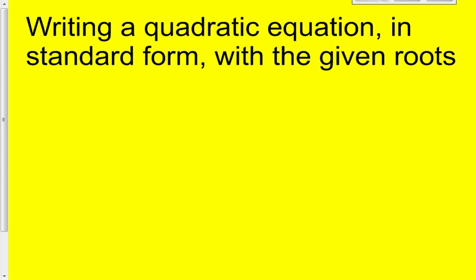Hi class, the second part of our notes for today is writing a quadratic equation in standard form with given roots. The way I like to explain this one is it's kind of like working backwards. If you were to see this equation in standard form, x squared minus 5x plus 6 equals 0, the way that you would do this one is that you would first start off by factoring.